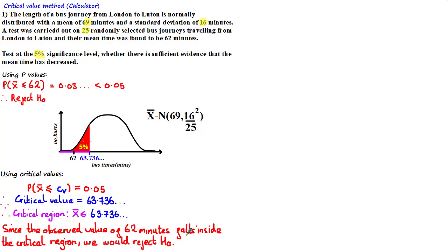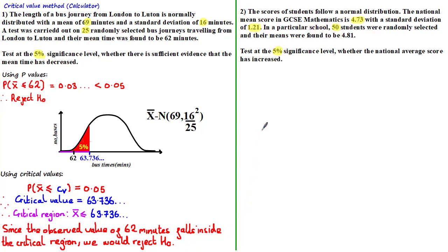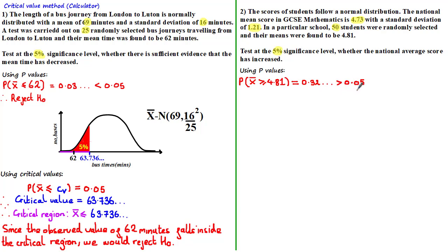For the purpose of this tutorial, we're just going to learn how to use critical values to choose whether to accept or reject the null hypothesis. Looking at the next example, which was also one we looked at in a previous tutorial, using p-values, we found that the p-value was equal to 0.32, which was greater than 0.05, the significance level, and therefore we chose to accept H0.